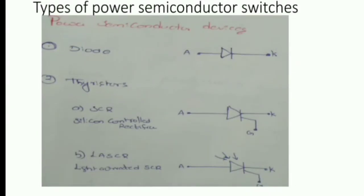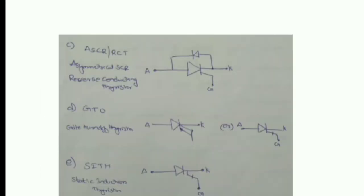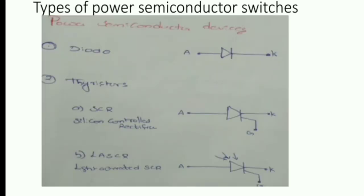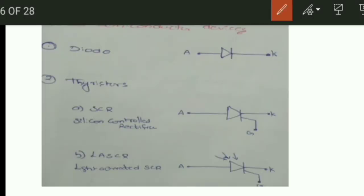Good morning, dear students. Here we are discussing types of power semiconductor switches. The first one is the diode, which has the symbol with anode and cathode. The next family is the thyristor, which consists of several devices.